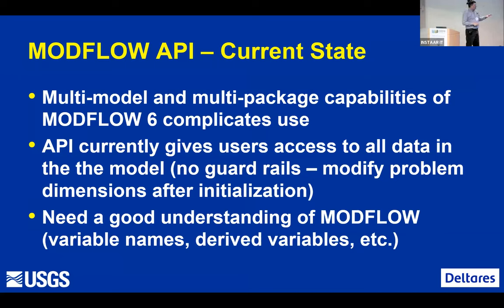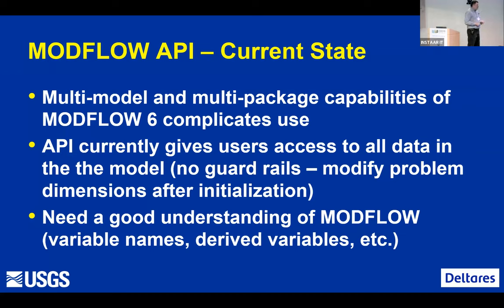So, our current state for this API — I'll show some examples. This multi-model and multi-package capability makes it a bit complicated with BMI because the standard BMI calls are basically get value and set value. But since we have two models, let's say for hydraulic conductivity — we have two hydraulic conductivities, so there isn't a unique hydraulic conductivity for the model. We basically had to come up with ways to access individual pieces of data.